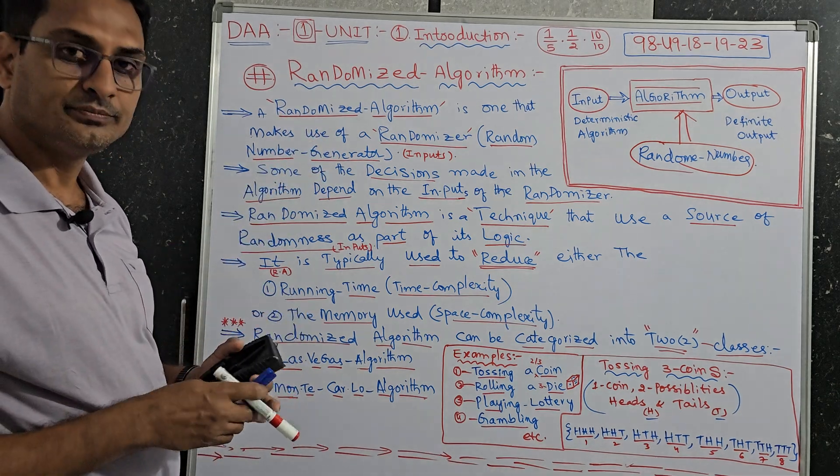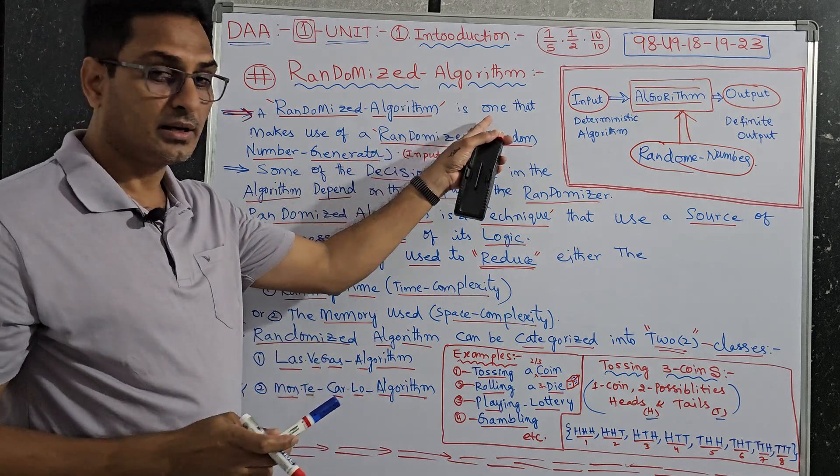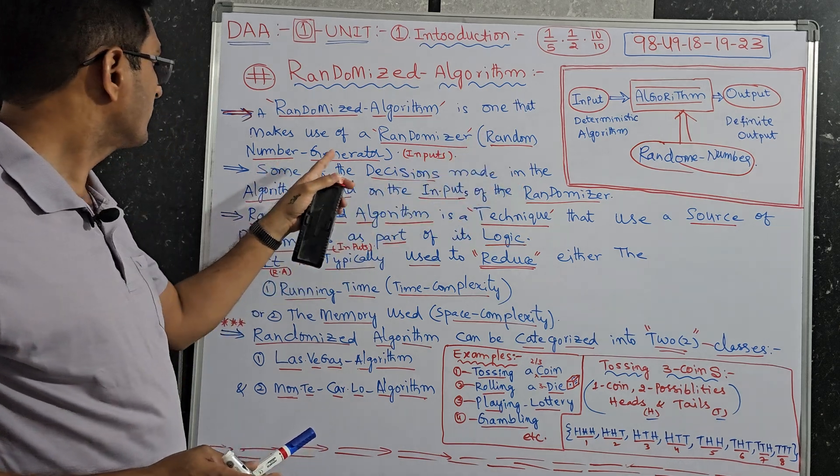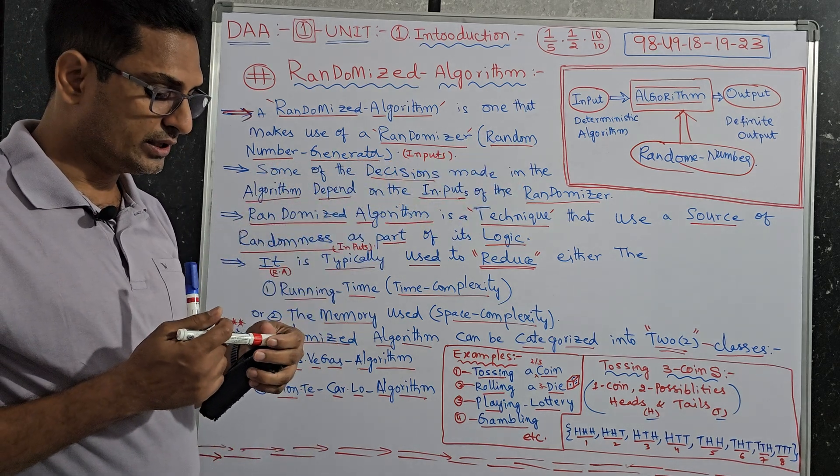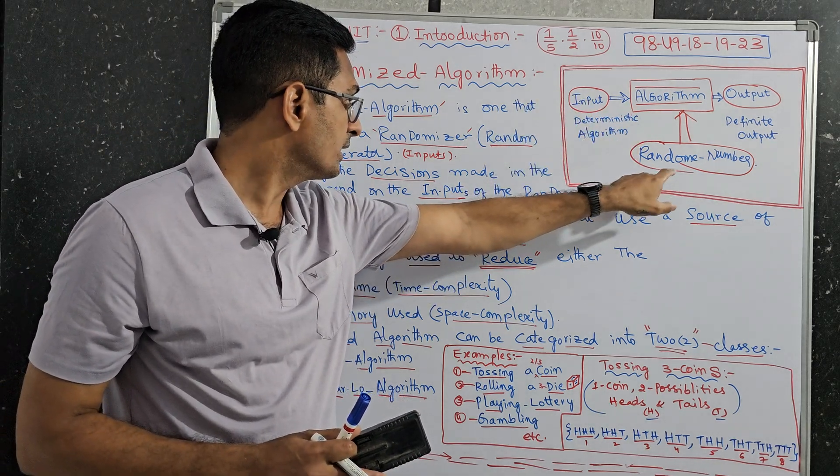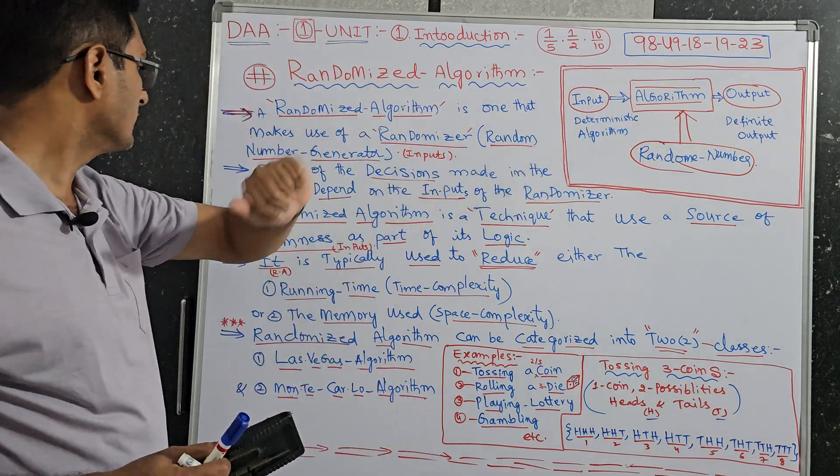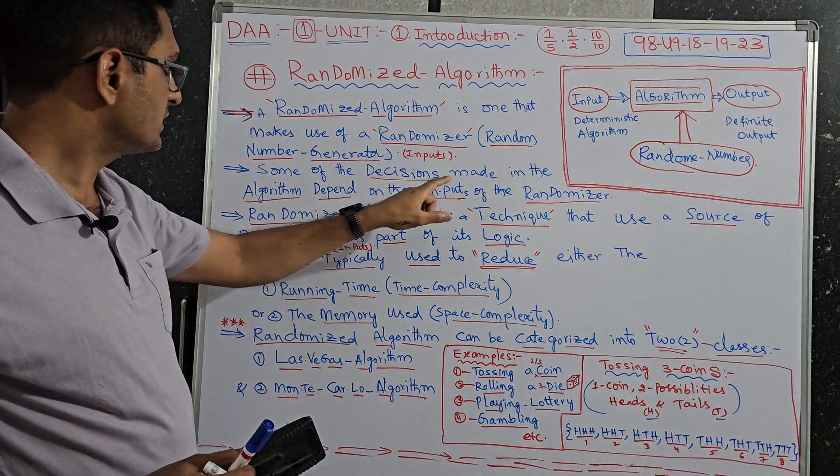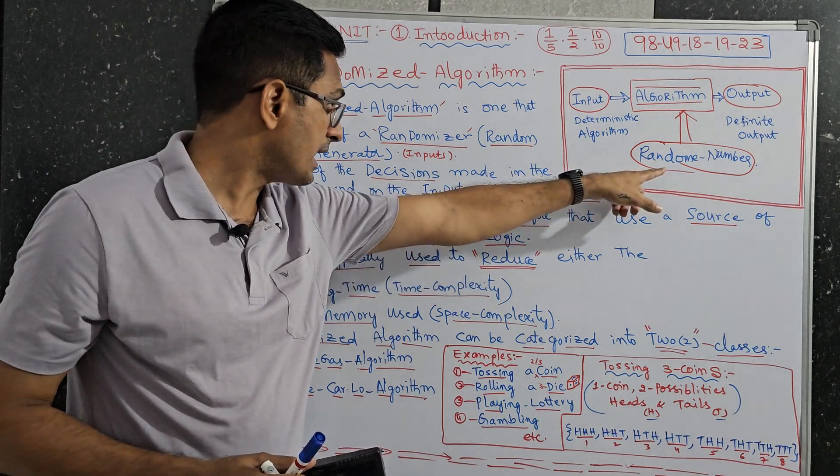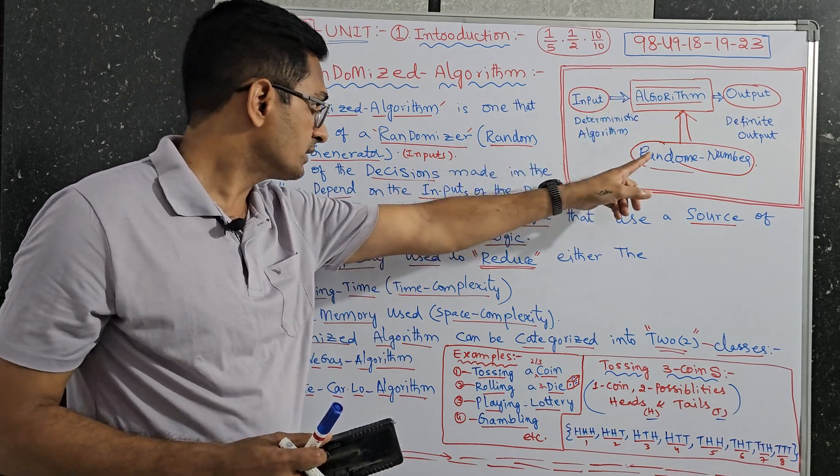Now coming to the definitions. Randomized algorithm. First point. Randomized algorithm is one that makes use of randomizer, means random number generators. We will give random number of inputs, not exact inputs. These inputs and random number inputs, then this deterministic general algorithm will become as randomized algorithm.